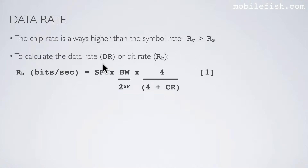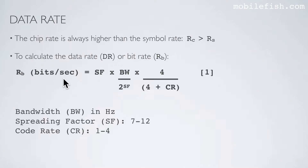To calculate the data rate, abbreviated as DR, or bit rate, abbreviated as RB — by the way, data rate and bit rate are the same — you can use this equation. The bit rate equals the spreading factor, which represents the number of raw bits each symbol carries, times the number of symbols per second, times the coding rate. The coding rate calculates the actual number of bits which carry information.